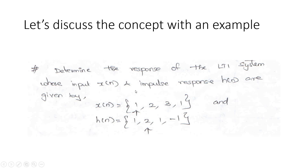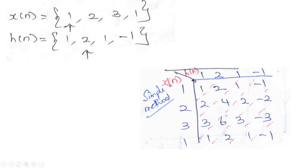They give you two sequences and you have to calculate the convolution and plot it. In the matrix method, we write h(n) like this and x(n) like this — you can interchange them, since convolution of x(n) and h(n) equals convolution of h(n) and x(n). So h(n) = [1, 2, 1, -1] is written in the row, and x(n) = [1, 2, 3, 1] is written in the column. Then we multiply the first element, 1, with all elements of h(n), giving [1, 2, 1, -1].